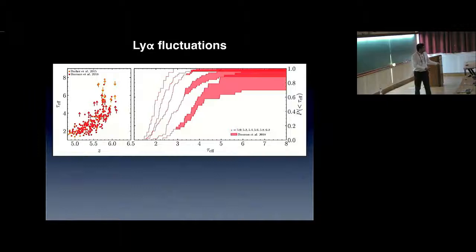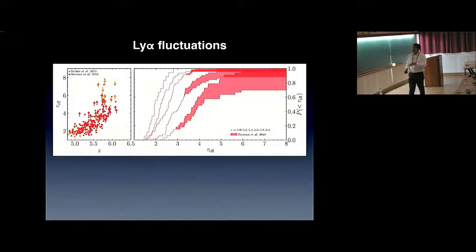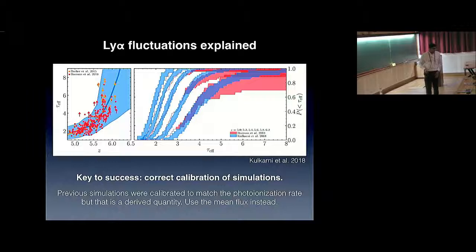Here again I show a plot where the left panel is the effective opacity scatter plot that I showed a while back, and here again are those distributions. This time I'm splitting the lower limits as optimistic and pessimistic, where the lower limits are treated as detections or completely infinite opacity systems. Once we calibrated them to the mean flux that was observed instead of the photoionization rate, we found that the simulation matched these data perfectly. You can see that even the distributions are reproduced in these models. In fact, we can go further now and predict how these distributions will look like in higher redshift bins. We have been awarded about 113 hours on VLT to target 29 high-redshift quasars, where we're aiming to do Lyman-alpha and Lyman-beta studies to make this picture a bit more confident.